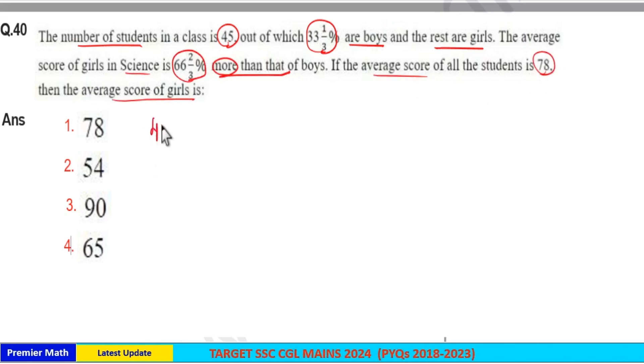Here, total number of students are 45, out of which 33⅓% are boys, means 100/3 percentage, means ⅓ is the fraction. So ⅓ of total students are boys, which means ⅓ of 45 is 15.